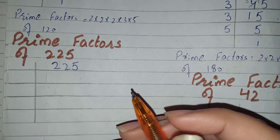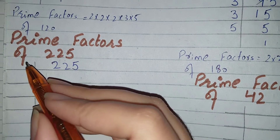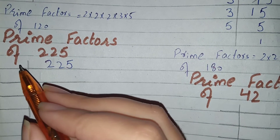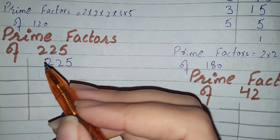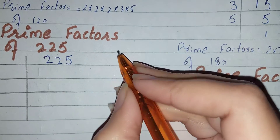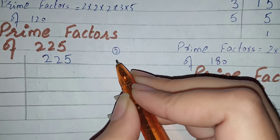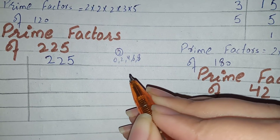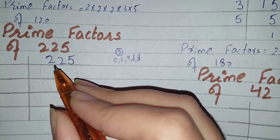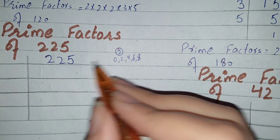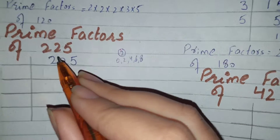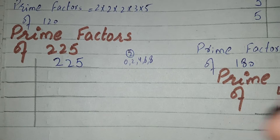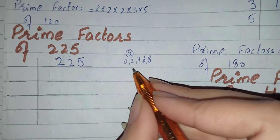When we start to find prime factors of any number, we always start with the least number. Can we take 2 here or not? To check whether the number is divisible by 2 or not, the rule is that if the number ends with 0, 2, 4, 6, or 8, then the number is divisible by 2. The last digit of 225 is 5, not from these, so this number can't be divided by 2. We can't take 2 here.